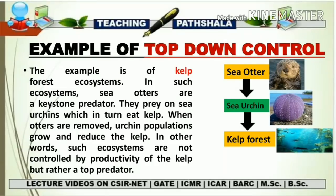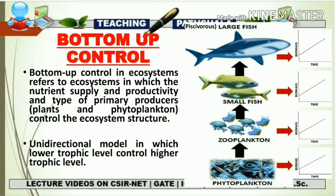A real-world example of top-down control is the kelp forest ecosystem. Kelp forest is an underwater ecosystem. Sea otters are marine mammals, and sea urchins are echinoderms that feed on kelp. When sea otter population is high, they feed heavily on sea urchins, reducing sea urchin numbers and allowing kelp forest to thrive. When sea otter population is low, sea urchins multiply and feed heavily on kelp, reducing the kelp forest. Sea otter controls sea urchin, and sea urchin controls kelp forest. Now we turn to bottom-up control.